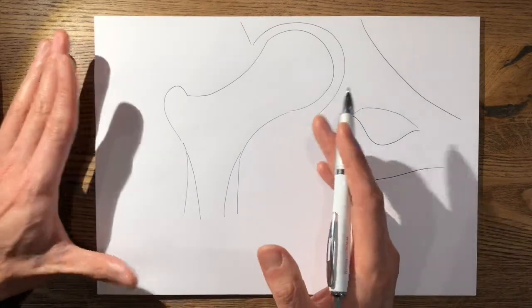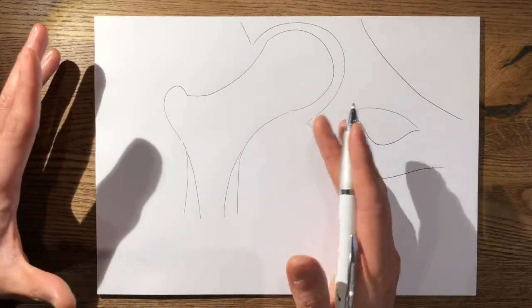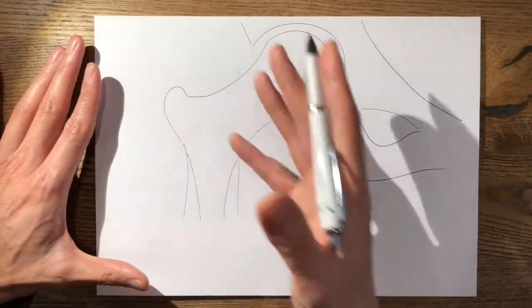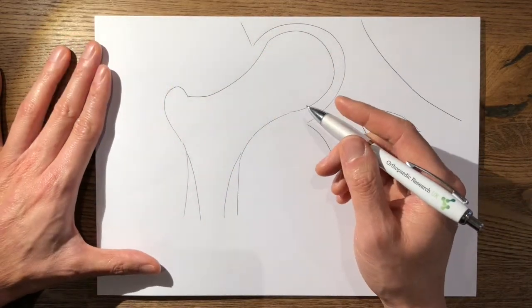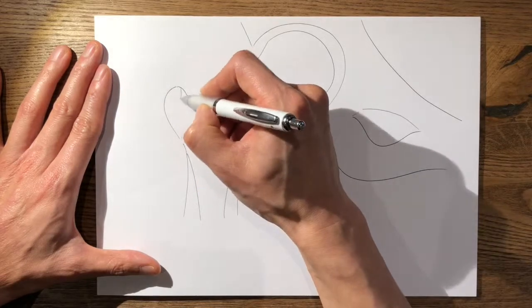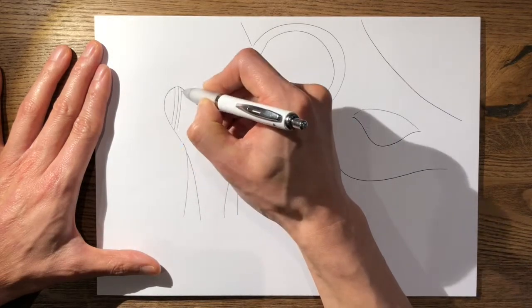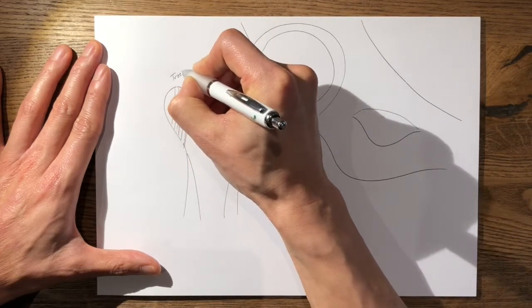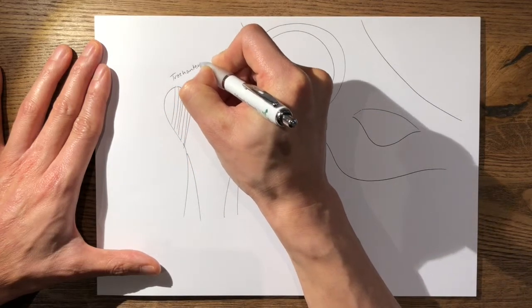So to remember the tensile and compressive groups, there are, broadly speaking, five groups to remember. There's one trochanteric group, and I'd normally get this out of the way first because that's easy to remember, and the lines go in this direction. So that's the trochanteric group.